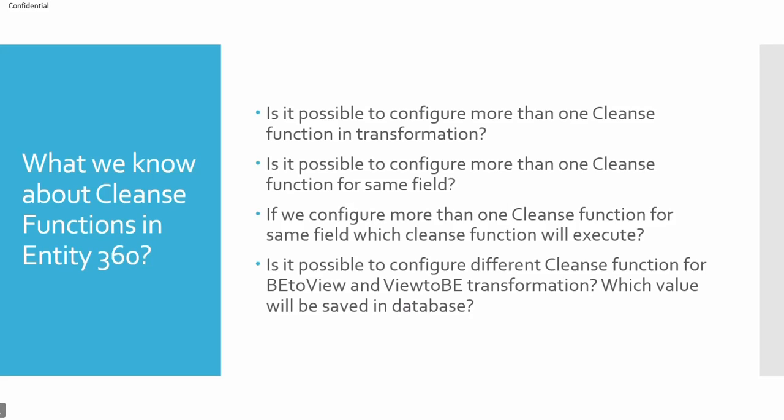The next question: is it possible to configure different cleanse functions for business entity to view and a different one for view to business entity? As per the demo, in view to business entity we added a comma in the full name, and for display purposes we made it uppercase and removed the comma. So yes, you can do that. The database value will be different from what is actually shown on screen — the saved database value is based on the view to business entity transformation.